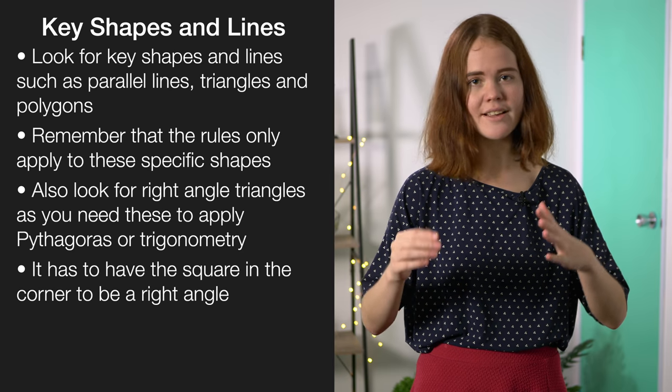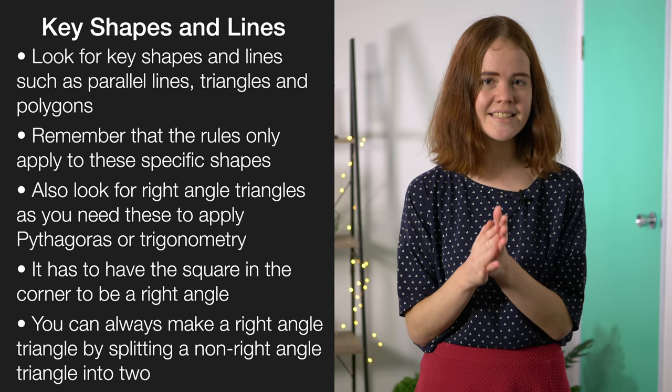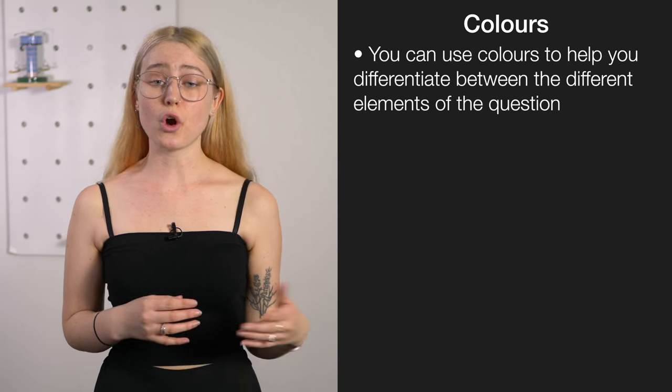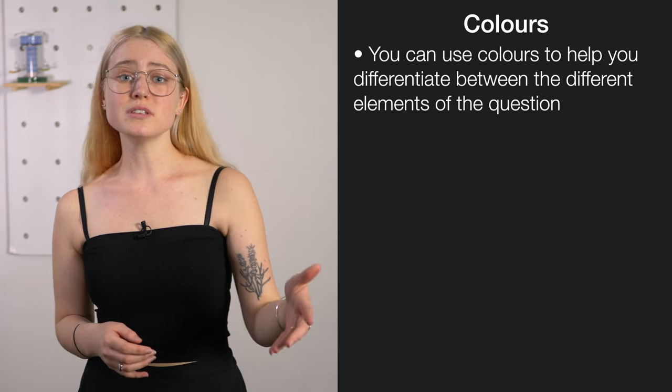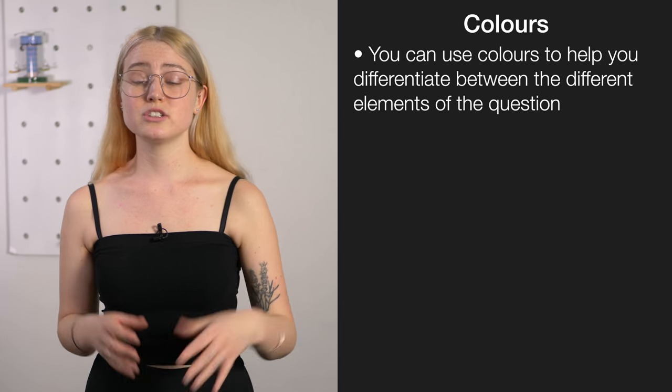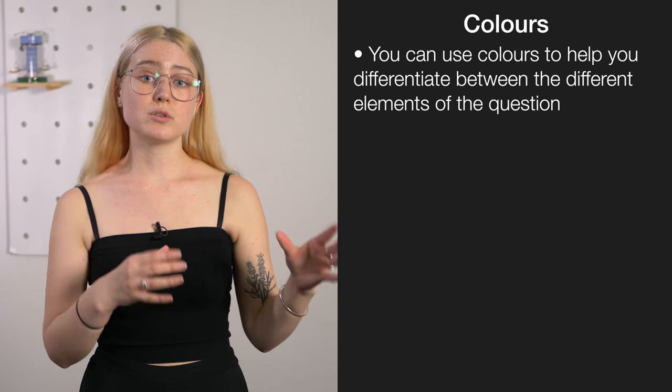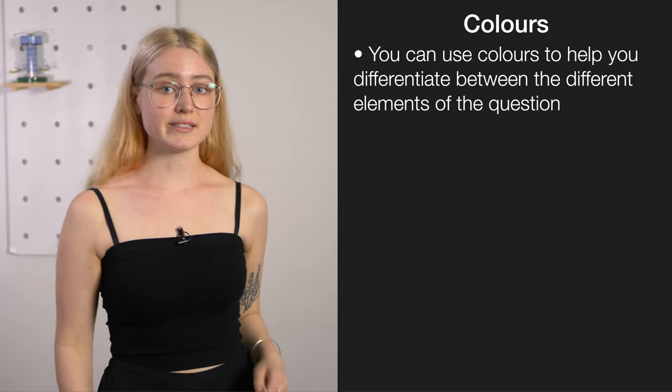If there aren't any right angle triangles already present in the picture, you can easily make them by just splitting one non-right angle triangle into two halves. Another strategy that can be really helpful is the use of colours in your exam. Quite often the diagrams you're given are going to have a lot going on — you're going to have angles P, Q, R, S, T — and you want to be able to differentiate them, particularly when you start drawing your own lines to make right angle triangles. Using colours is a really useful way to quickly and easily identify different parts of the question you're trying to answer.